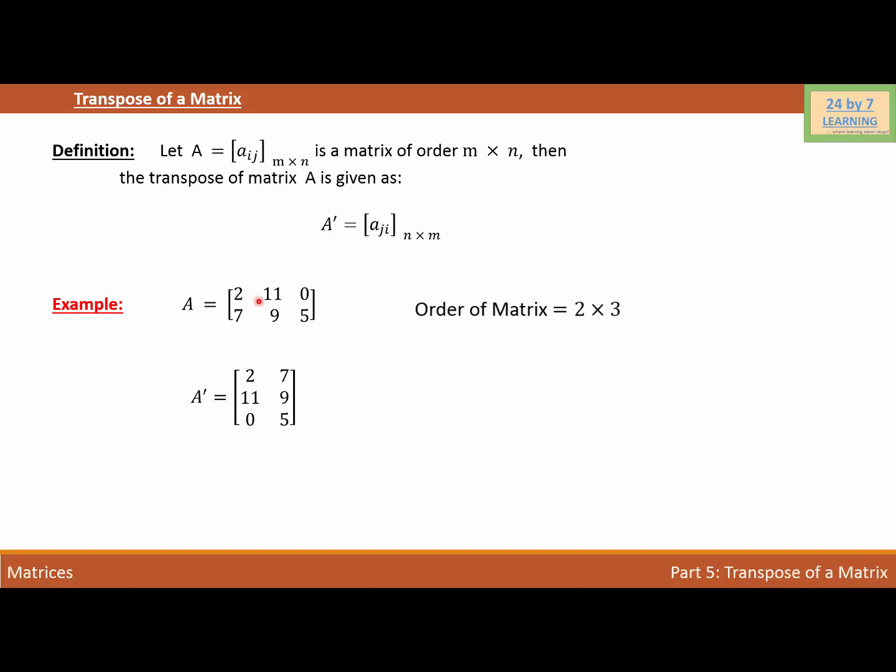So now the first row is 2, 11, 0. That becomes our first column: 2, 11, 0. And our second row is 7, 9, 5. That becomes our second column which is 7, 9, 5.